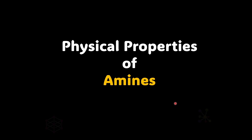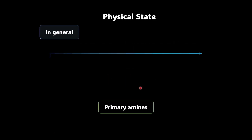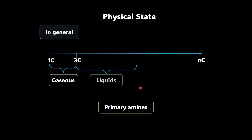In this video we will learn about the physical properties of amines. Talking about the primary amines, the lower aliphatic amines are gaseous, whereas the primary amines with three or more carbons are liquid and higher amines are solid.